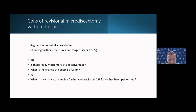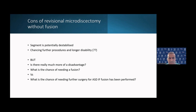Do we know for a fact what is the quantifiable disadvantage of a redo decompression without fusion? What is the chance of needing a fusion? What is the chance of needing further surgery for adjacent segment disease — not degeneration, adjacent segment disease — if fusion has been performed? So if we do go ahead and go for a fusion, we are then introducing new biomechanical variables that also predispose our patient to potential further procedures. The question of further procedures with decompression alone versus fusion has not been addressed satisfactorily, in my opinion.